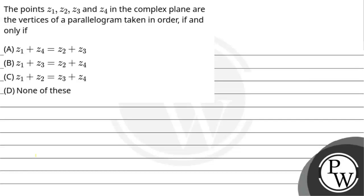Hello, so the question is: the points Z1, Z2, Z3 and Z4 in the complex plane are vertices of a parallelogram taken in order if and only if: Option A is Z1 plus Z4 equals Z2 plus Z3. Option B is Z1 plus Z3 equals Z2 plus Z4. Option C is Z1 plus Z2 equals Z3 plus Z4, and Option D is none of these.